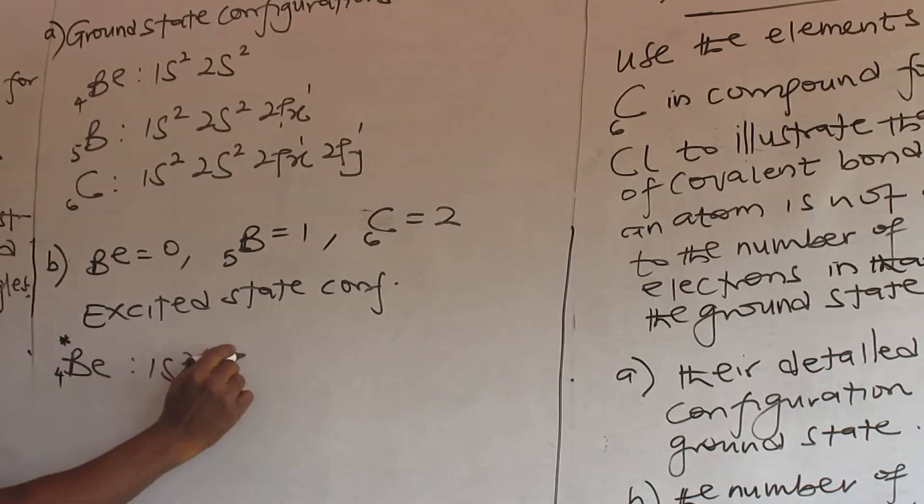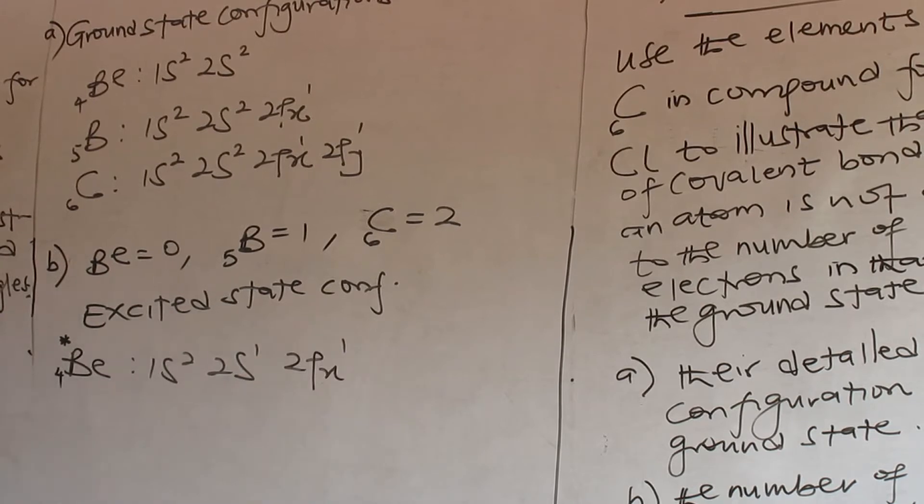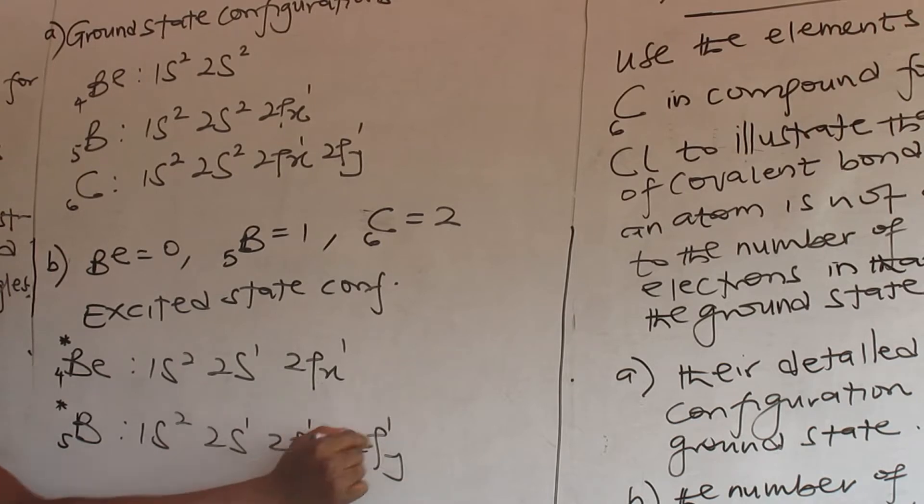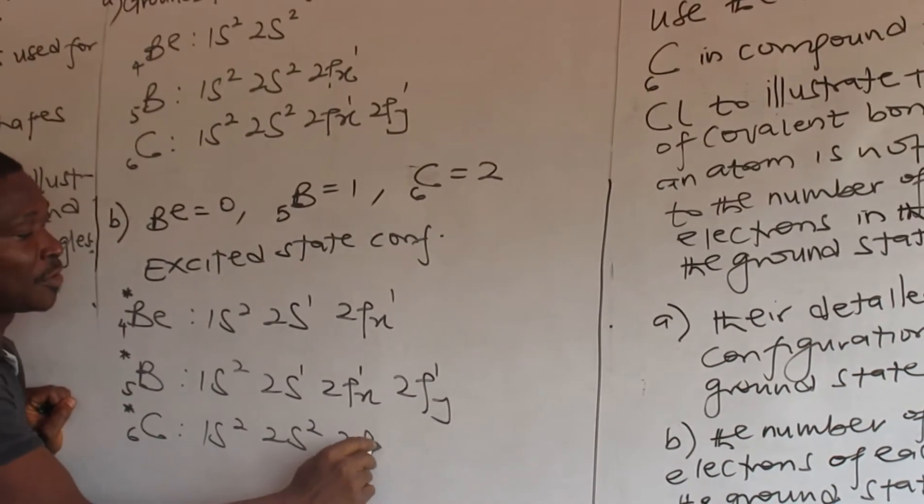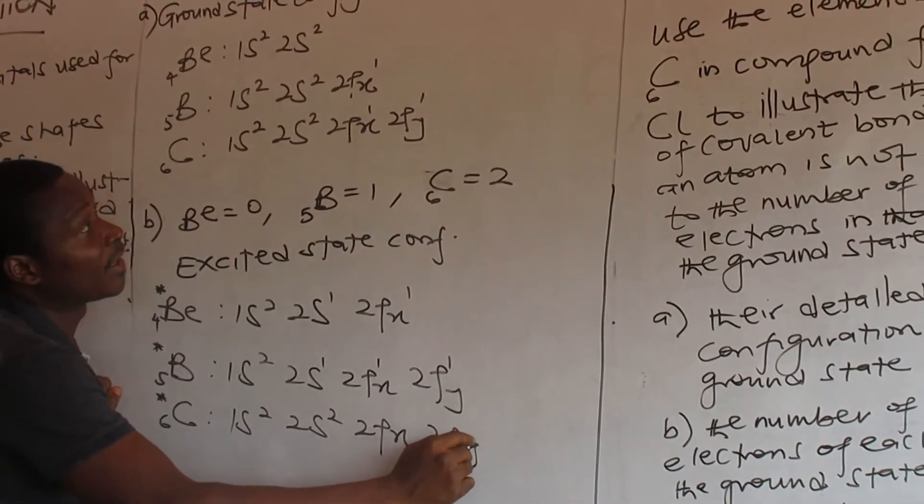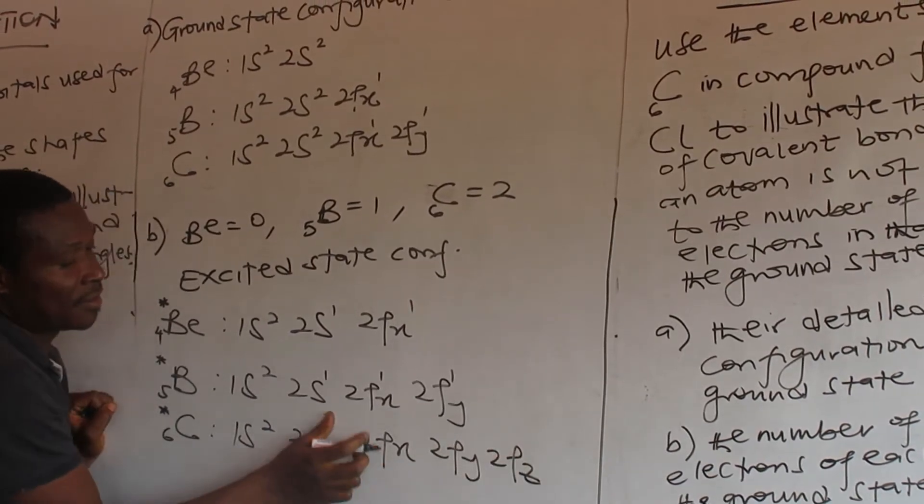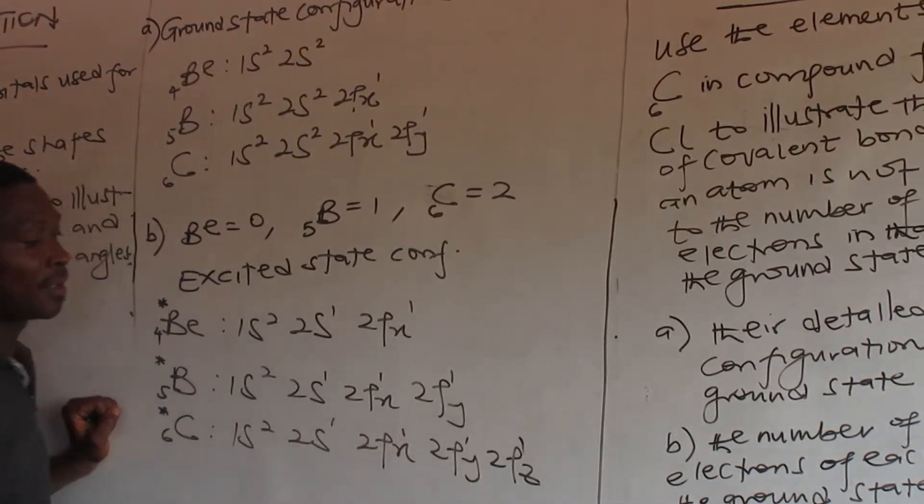Beryllium: 1s² 2s¹ 2px¹. Boron: 1s² 2s¹ 2px¹ 2py¹. Carbon: 1s² 2s¹ 2px¹ 2py¹ 2pz¹.